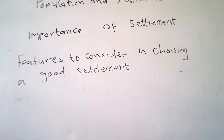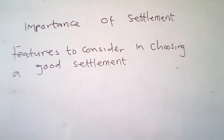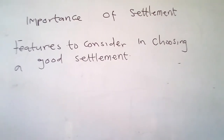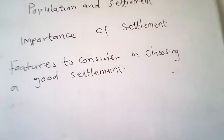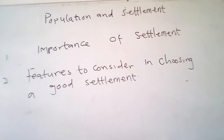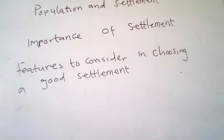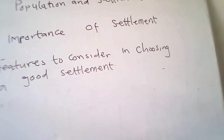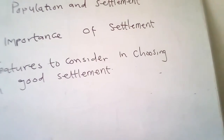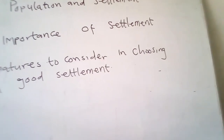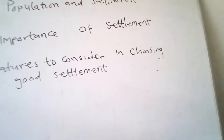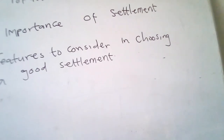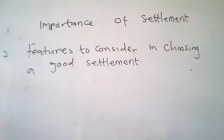Features to consider in choosing a good settlement: one, check whether the place is free or flat so there will be no flooding when there is heavy rain. Two, there should be easy access to local raw materials. Three, you must have access to local water supply for drinking and washing. Four, you must have access to good routes and transportation. Five, you must have access to building materials. Six, check the quality of the soil before choosing a settlement.